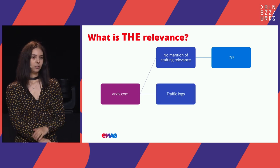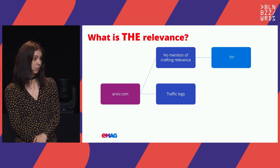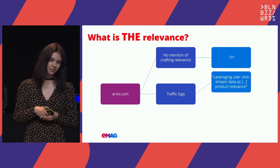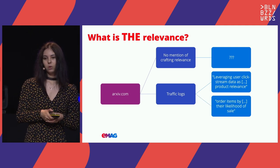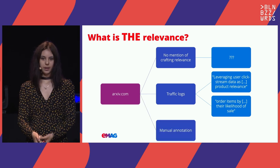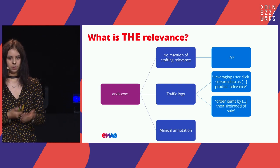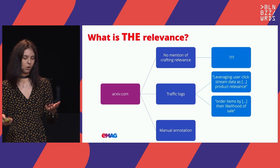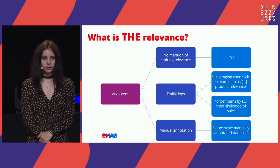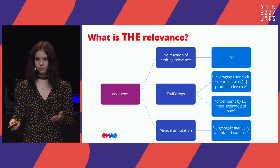Then there are those that recommend using traffic logs as a data source for your relevance models. Some quotes regarding this are leveraging user click-stream data as product relevance, or ordering items by their likelihood of sale. The third very distinct category is the one that uses manual annotations to label their term, product, or document pairs. The most known one is the search queries dataset, which is a large-scale manually annotated dataset of difficult queries.